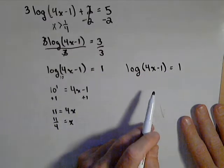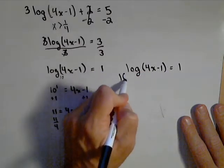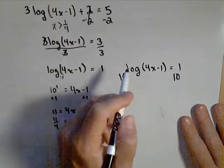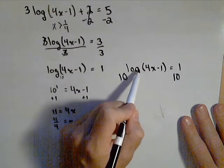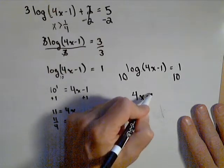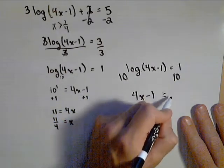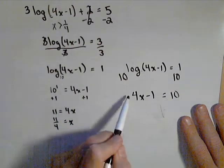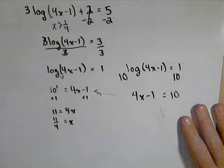The other way you can think about it is making both sides exponents of 10. We have a property of logs that says if this base and this base are the same, they essentially cancel and we get left with 4x - 1. And over here is 10 to the first, or 10, and we get to the same place we were before.